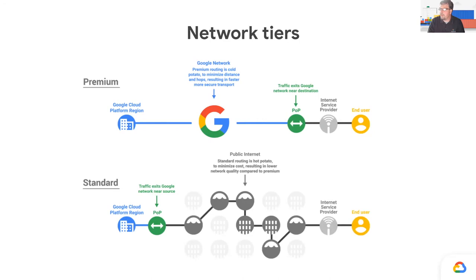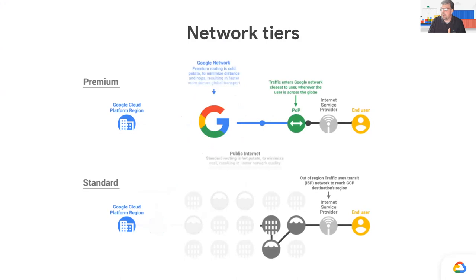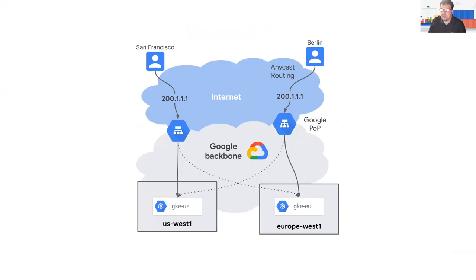There are two network tiers. Premium — cold potato routing, keeping traffic in the Google network as long as possible, exiting only as necessary — and Standard, which is slightly lower cost but with reduced SLAs and QoS. Premium is the default; you must explicitly choose Standard. With anycast routing, two users hitting the same IP from different locations are brought to different POPs, then put on the Google backbone and routed to where they need to go.